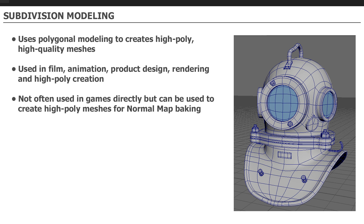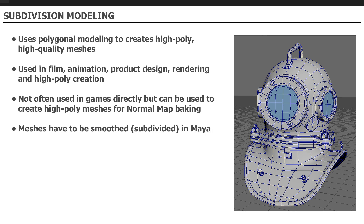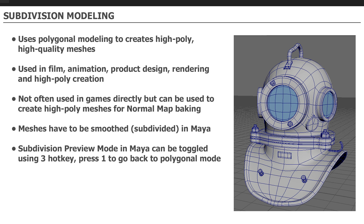These meshes are not often used in games directly, but can be used to create high poly meshes in order to bake normal maps and get that detail from the high poly down to a lower poly through a normal map texture. You usually do not take subdivided models and import them directly into a game engine because they're way too high in triangle count. You could bring them into UE5 using Nanite technology, but primarily you don't do this workflow. Subdivision modeling is used for a different part of the process and a different end result.